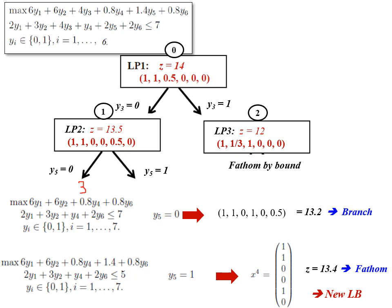In node three, we have fixed y3=0 and y5=0, so those terms disappear from the objective function and constraint. The remaining model includes y1, y2, y4, and y6. Solving with the greedy algorithm: set y1=1 (weight two, satisfies seven), then y2=1 (total five, satisfies seven), then y4=1 (total six, satisfies seven).